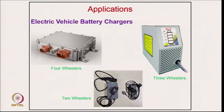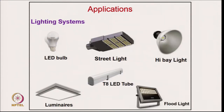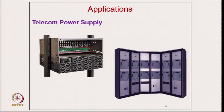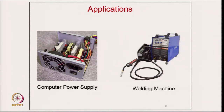Applications of these buck-boost converters include electric vehicle battery chargers for two-wheelers, three-wheelers, and four-wheelers; electric drive systems such as PMSM drives and electric motor drives; lighting systems including LED bulbs, street lights, hybrid lights, T8 tube lights, luminaries, and flood lights — all of which need DC supply from AC. Also included are telecom power supplies, home inverters, uninterruptible power supplies, computer power supplies, and welding machines using high-frequency transformers.